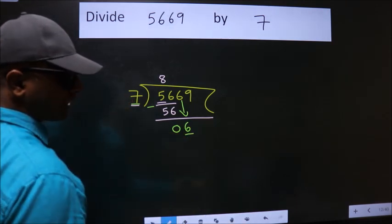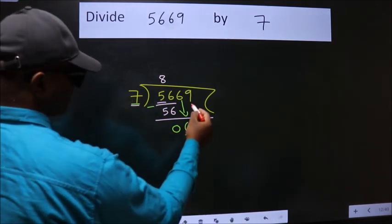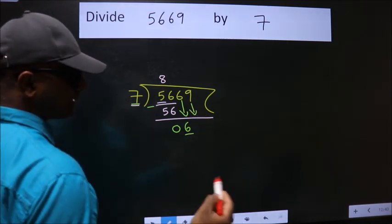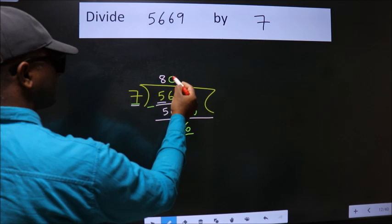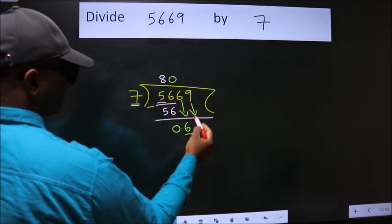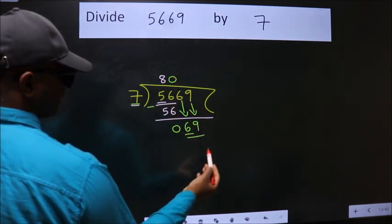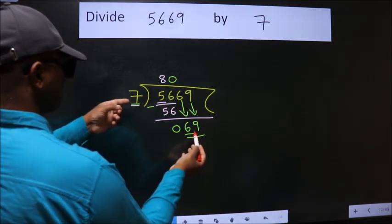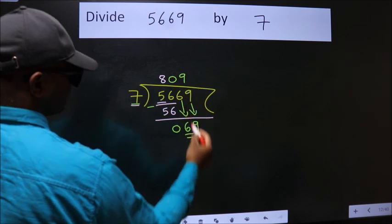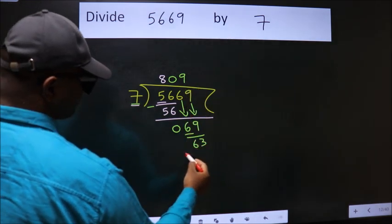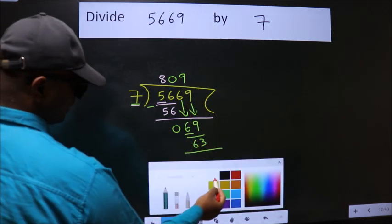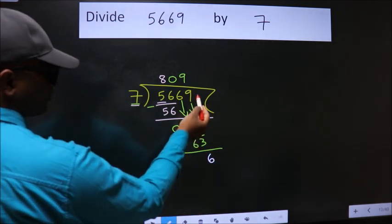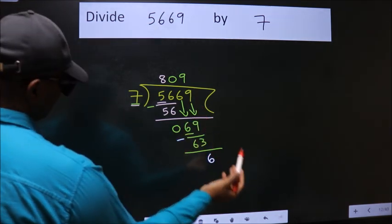So we should bring down the second number, and the rule to bring down the second number is put zero here. Then only we can bring down this number. So 69, a number close to 69 in 7 table is 7 times 9, 63. Now we subtract, we get 6. No more numbers to bring down, so we stop here.